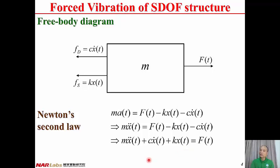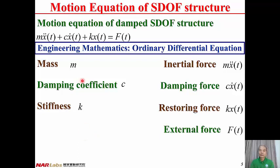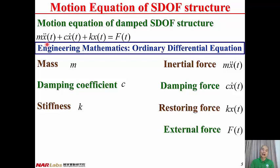After moving minus Kx and Cx to the left-hand side of the equation, it becomes M x-double-dot plus C x-dot plus Kx equal to Ft. This is a second-order ordinary differential equation. The motion equation of the damped single-degree-of-freedom structure is second-order because of the second derivative, and it is non-homogeneous because of the non-zero forcing function, with constant coefficients M, C, and K.